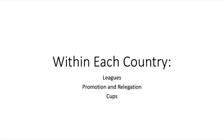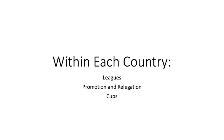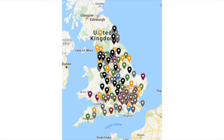Within each country, you typically have leagues connected by promotion and relegation, and then domestic cups — tournaments open to pretty much everybody in the country. As an example, this is the so-called pyramid of leagues within England: Premier League on top, next three levels are the Football League. This kind of system exists within every country all over the world, and there are a lot of football clubs out there.